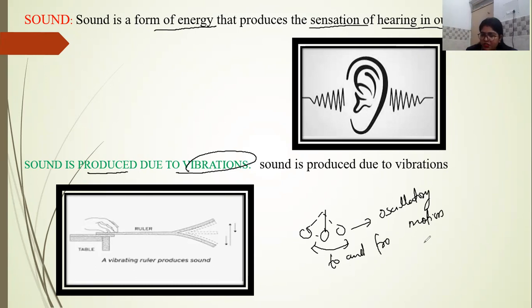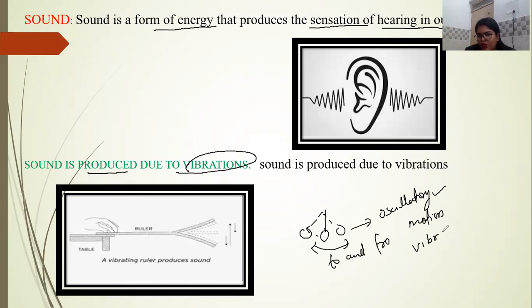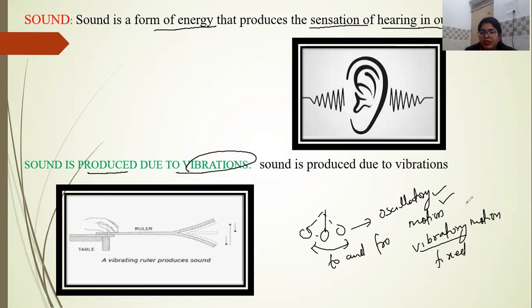What is oscillatory motion? If the motion is repetitive at a regular interval of time, it is oscillatory motion. But if only a part of the body is oscillating while keeping the other parts fixed, then that is vibratory motion. In vibratory motion, only a part of the body is vibrating while the other parts are fixed. So we can say that sound is produced when the body is vibrating.